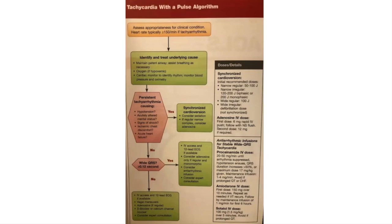If the rhythm is a wide complex tachycardia, again assess whether it is stable or unstable. If stable, vagal maneuvers will typically not be helpful since the origin is below the AV node. We want to give a medication that slows conduction through the pathways — either procainamide or amiodarone, with amiodarone being the first choice most of the time, at 150 milligrams over 10 minutes IV drip. For unstable wide complex tachycardia, we go to cardioversion, starting at a higher energy level, closer to 100 joules.